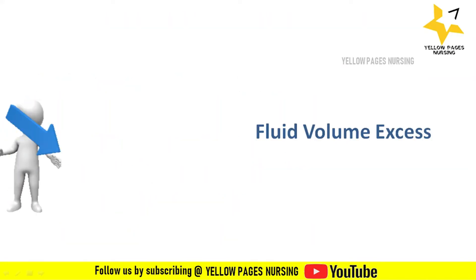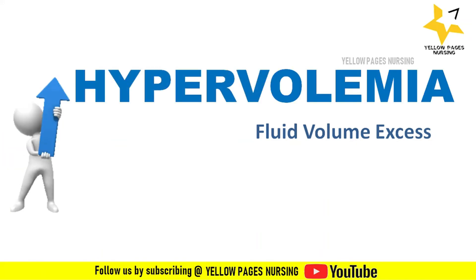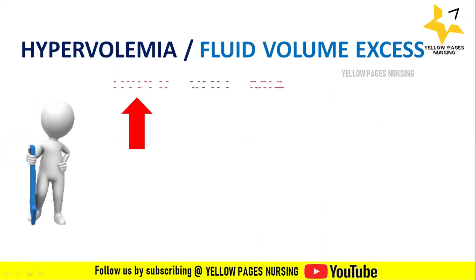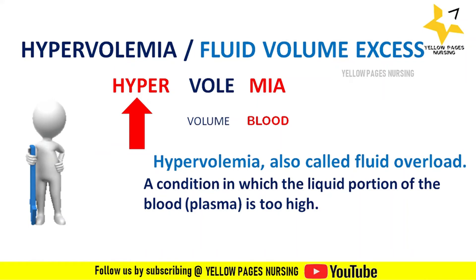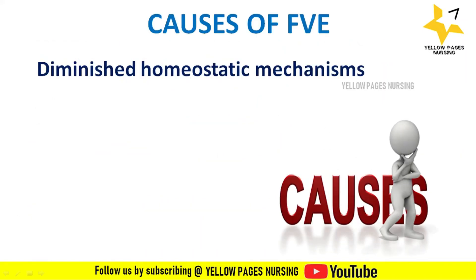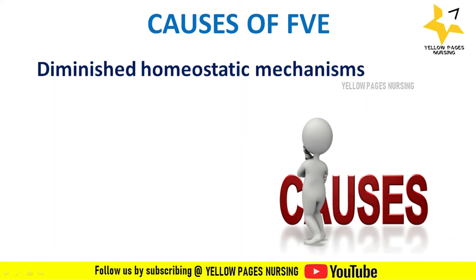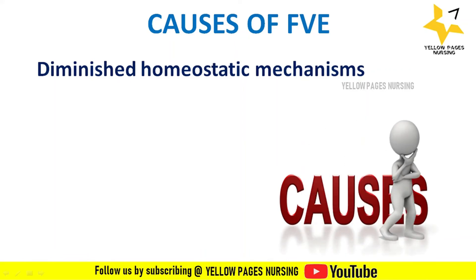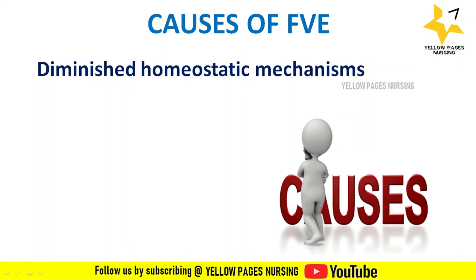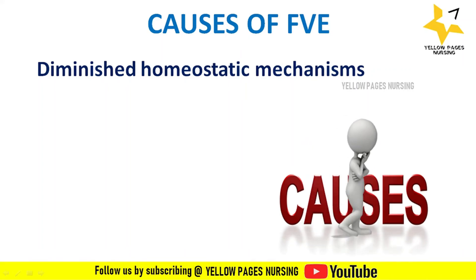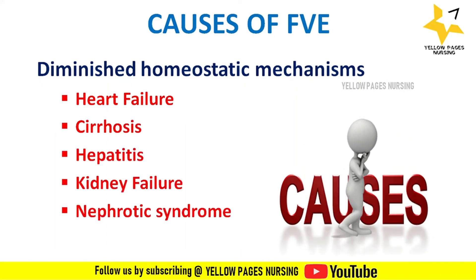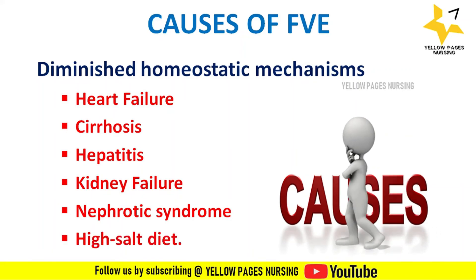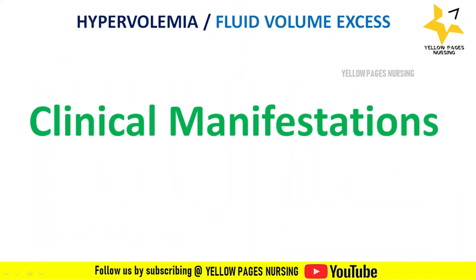Hypervolemia, also called fluid overload, is a condition in which the liquid portion of blood is too high. It is an excess of isotonic fluid — water and sodium — in the extracellular compartment. Causes include diminished homeostatic mechanisms (heart failure), cirrhosis, hepatitis, kidney failure, nephrotic syndrome, and high-salt diet.